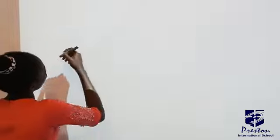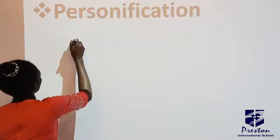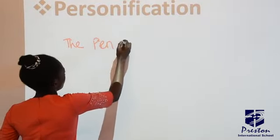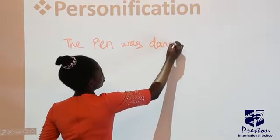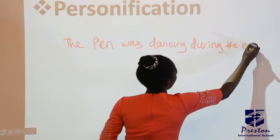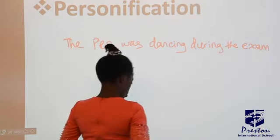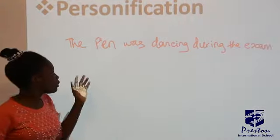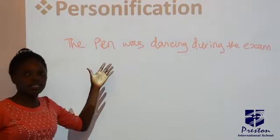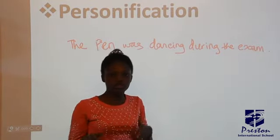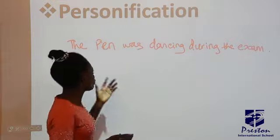You can also have an example like this: 'The pen was dancing during the exam.' This is talking about how fast the pen was moving when the person was writing. Now the pen is non-human, so when you say the pen is dancing, a non-human cannot be dancing. That's what we mean by personification — you personify it.